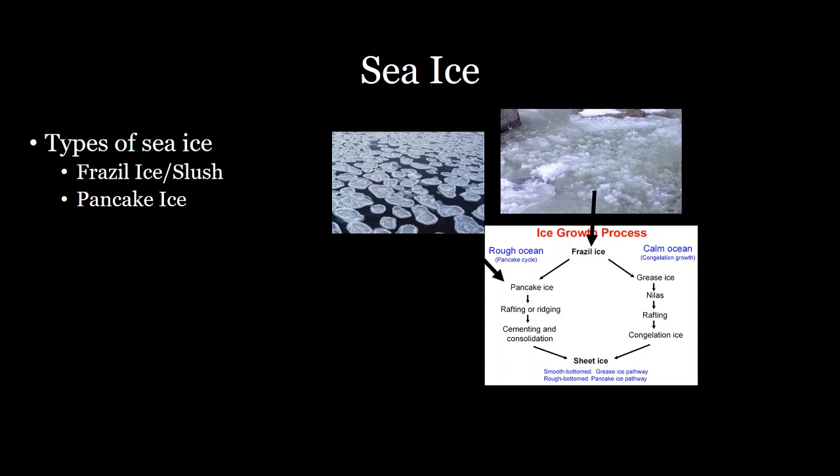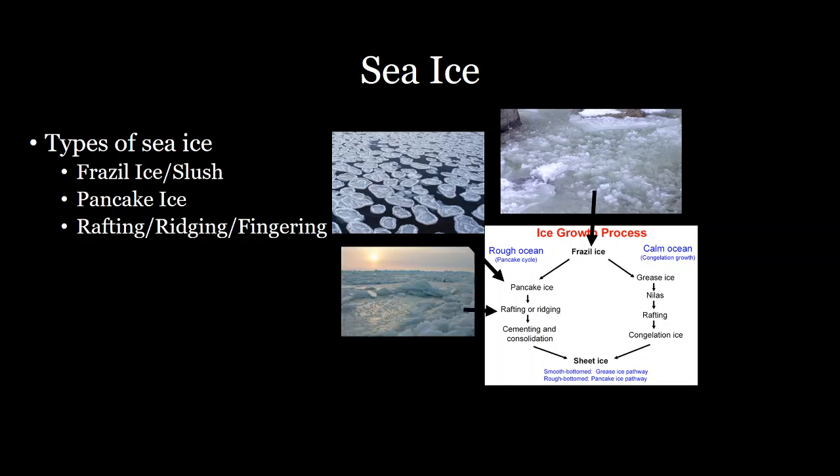As you get colder and more ice develops, you can start to get rafting, ridging, or fingering as larger expanses of ice develop. Because the ocean is really rough, these larger expanses will ram into each other and get pushed on top of each other, or they'll slam into each other and form a ridge.